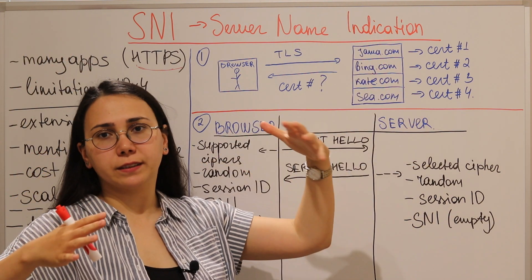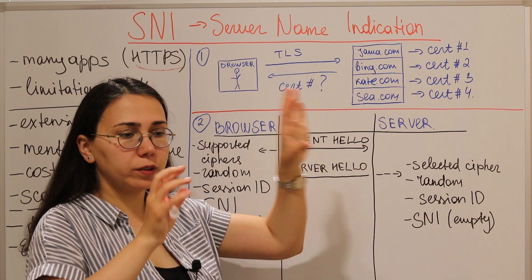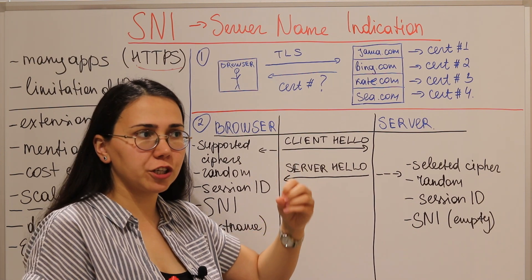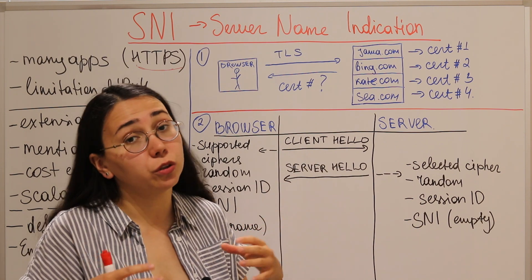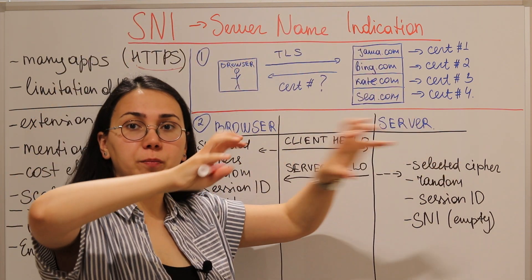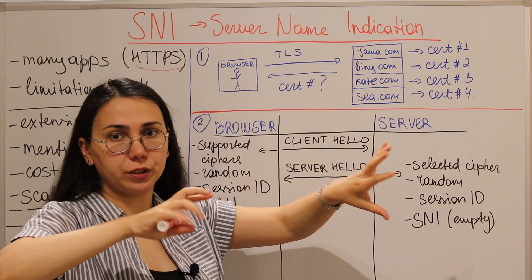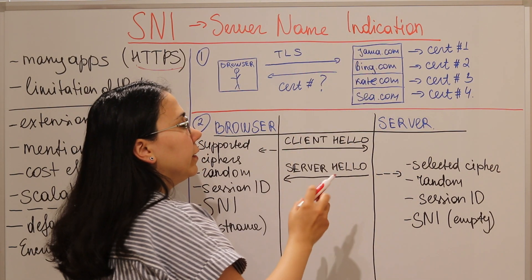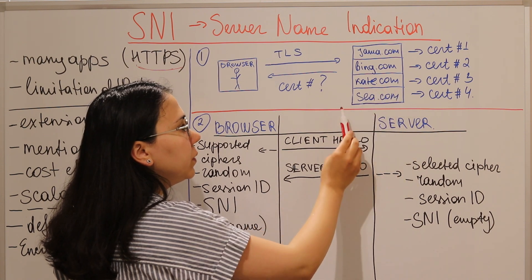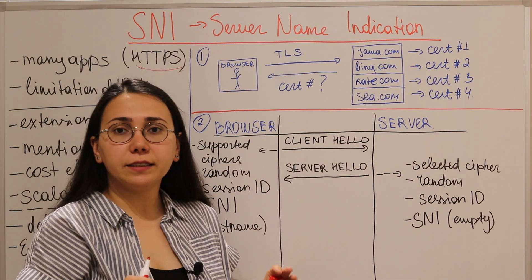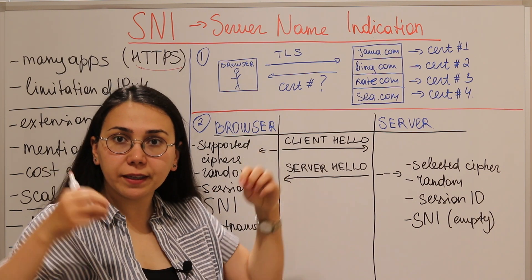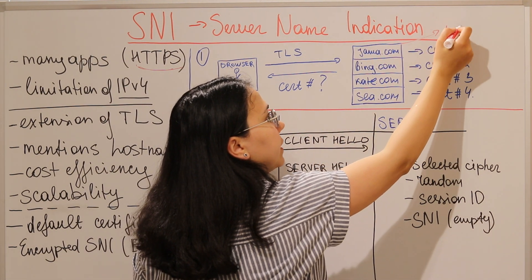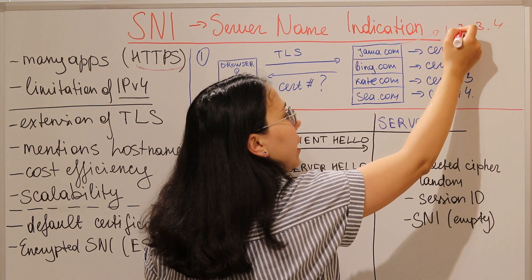When we use cloud infrastructure, one server might host different applications. In AWS, for example, one web server is shared by different virtual machines or EC2 instances running different applications. So one physical server can host jama.com, bing.com, k.com, and c.com — four applications, all isolated from each other but residing on the same server.